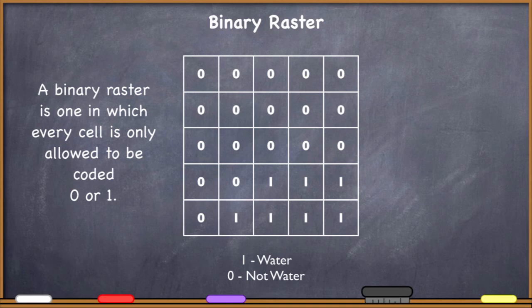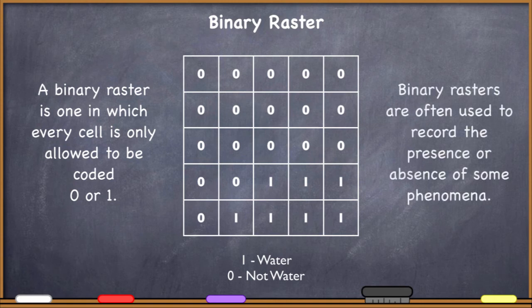Here we're looking at a raster that is storing land cover information, and we have one where water is, and we have zero where water is not. So rasters, binary rasters of this sort, are often used to record the presence or absence of some phenomenon. So here we're talking about water. We're just saying one, that means there is water there, and then zero, no water. And this gives us an idea about the distribution of water in the area of interest.